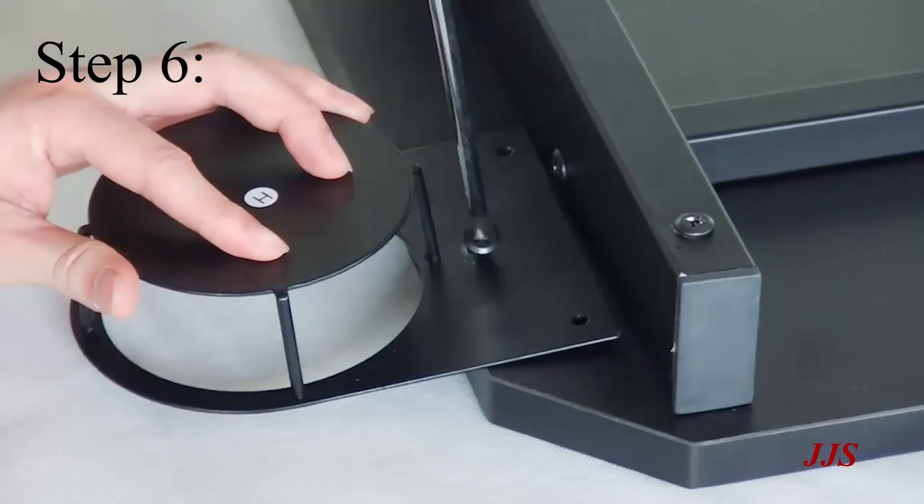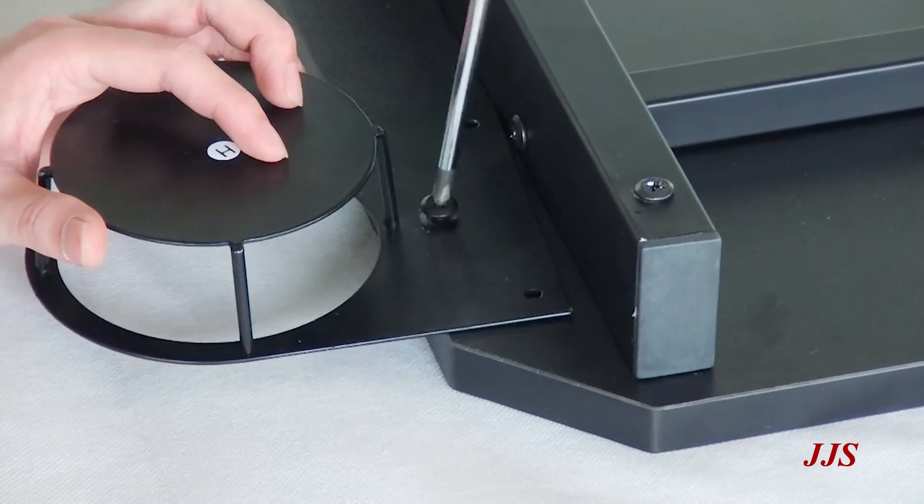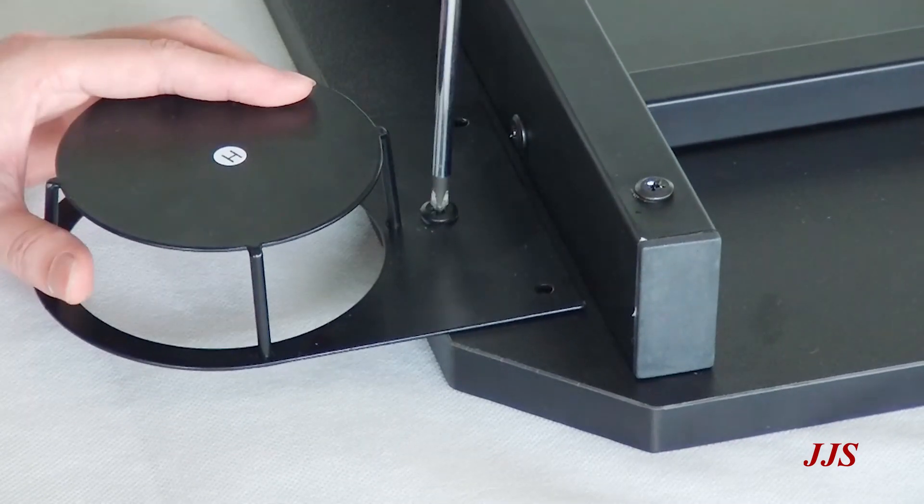Step 6. Attach the cup holder to the bottom side of the desk using screw D and screw F. You can tighten them up using a Phillips screwdriver.